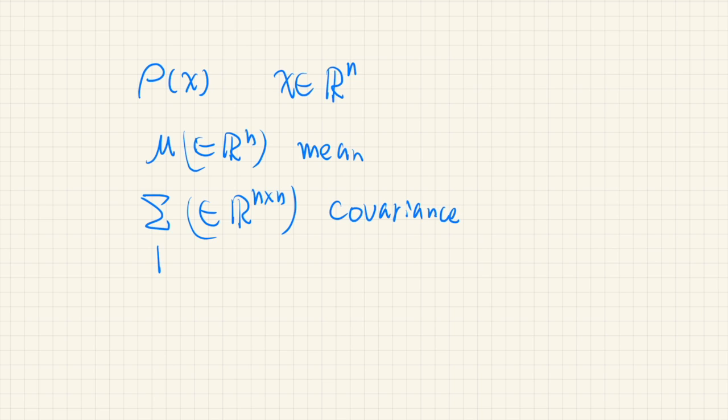So we need to specify the entire variance-covariance matrix, because just specifying the diagonal elements, or the variances, we can't specify a normal distribution completely.